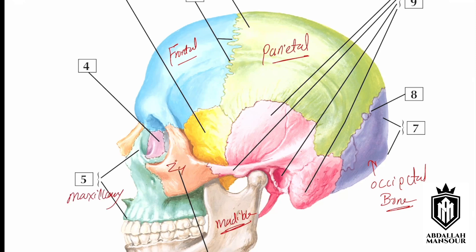And the zygomatic bone, number six. Inside the eye cavity you can find a bone called the lacrimal bone — one of the bones which is formed of multiple small bones connected together.